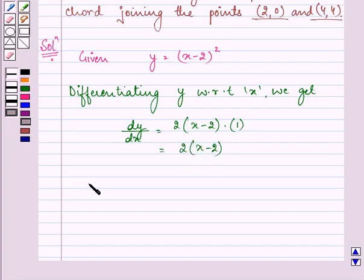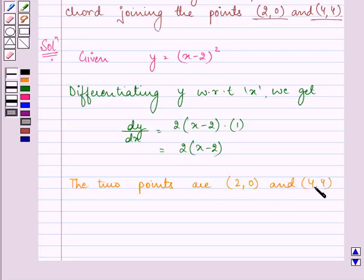Now the two points are (2,0) and (4,4). This is given to us in the question.